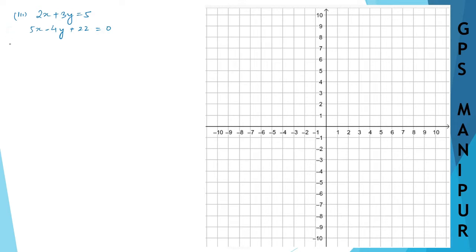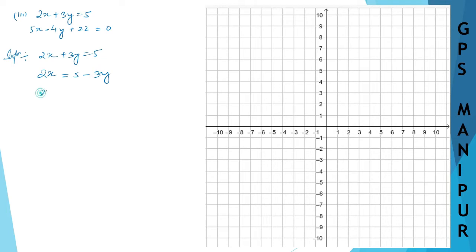Solution. Take the first equation: 2x plus 3y is equal to 5. Transfer 3y to the other side — it will be 5 minus 3y. So x is equal to 5 minus 3y divided by 2.